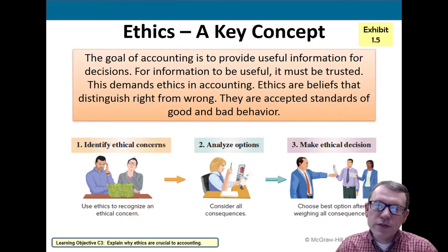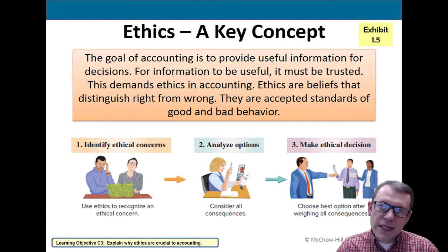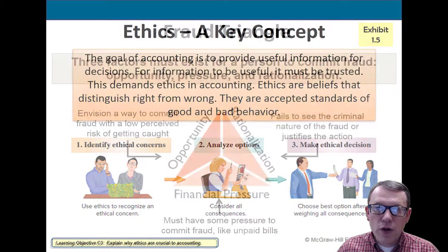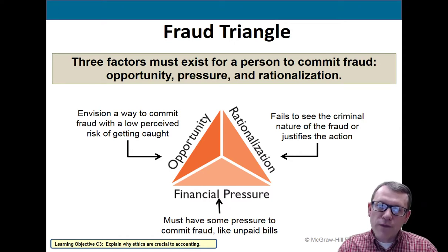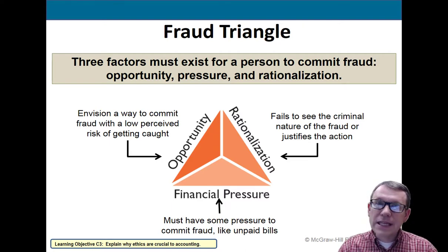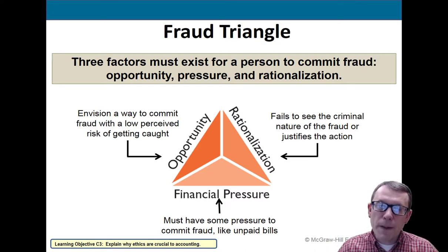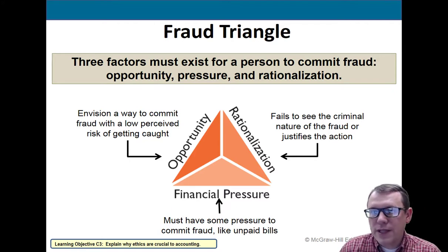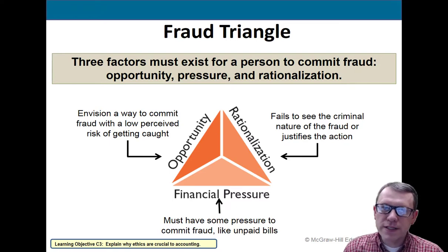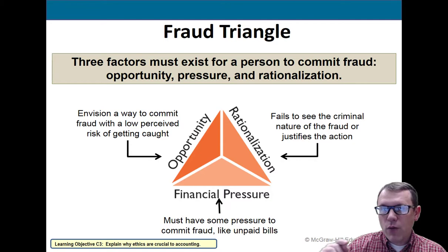Learning objective number three: explain why ethics are crucial to accounting. The main reason is that your financial information needs to be trusted — you need to know the information is good. We use the fraud triangle to understand how fraud can happen within an organization. The three sides of the fraud triangle are: opportunity (someone can see a way of committing fraud), rationalization (they say it's okay or they're justified), and financial pressure (a pressure that leads to committing fraud). Employees in positions where they can commit fraud are often bonded by organizations.